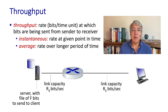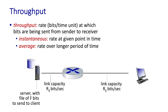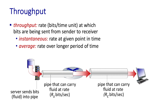The final performance metric we want to spend time on is throughput. Throughput is the rate — bits per second — that are being sent from a sender to a receiver. Throughput needs to be defined over an interval of time: it could be instantaneous, or averaged over a longer period. To think about throughput, it's useful to think about water flowing through pipes. A sender sends fluid into a pipe at some rate, and each transmission link along a path can carry fluid at some rate. Some pipes are fat, some pipes are thin.